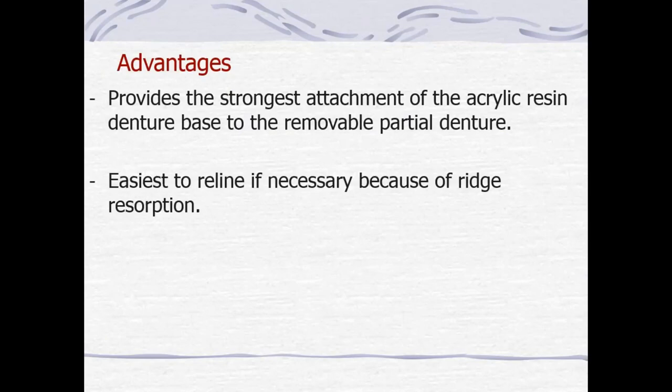Open lattice construction provides the strongest attachment of the acrylic resin denture base to the removable partial denture. It is the easiest to realign if necessary due to ridge resorption. It is the most strongly attached of the three construction types and also facilitates the relining and rebasing process.